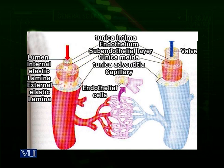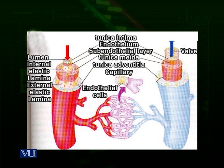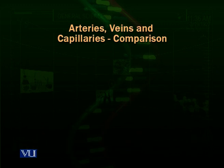On the other side, you can see this network joining back to make a small vein — this is called a venule. Venules join to make a large vein. So this system exists in all of the tissues: arteries, arterioles, capillaries, venules, and veins — coming from the heart, distributing materials, and returning back to the heart. Now we compare the structure of arteries, veins, and capillaries.